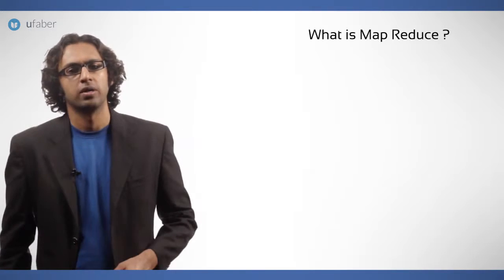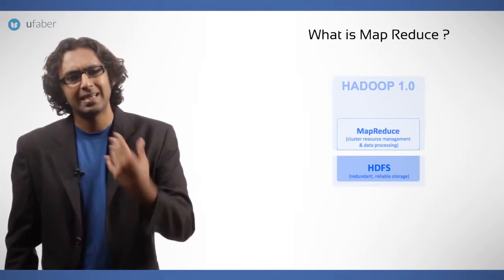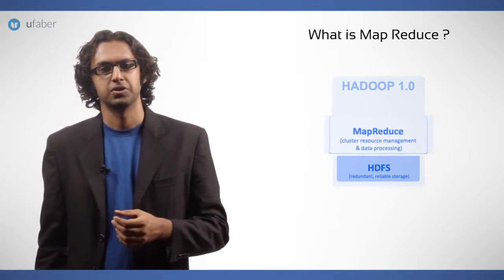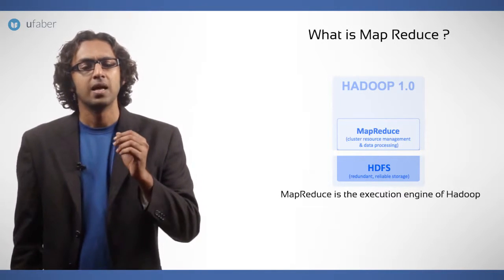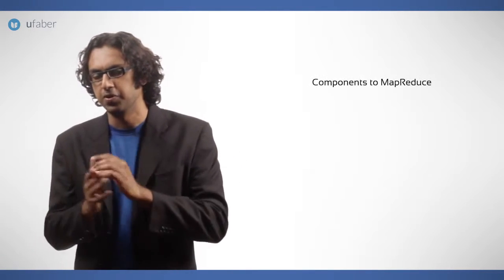Let's come back to the block diagram of Hadoop 1.0. The second component is called MapReduce. MapReduce is the execution engine of Hadoop. Its duty is to get the jobs executed. There are two main components of MapReduce.